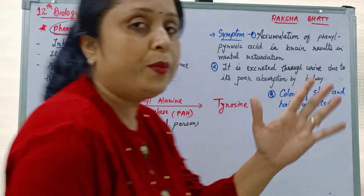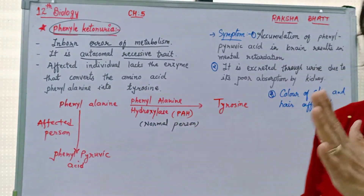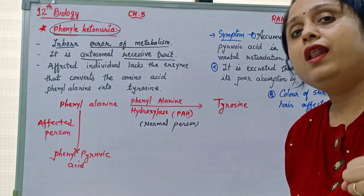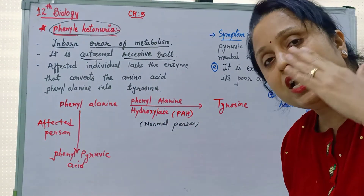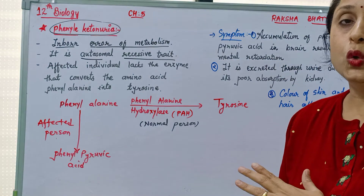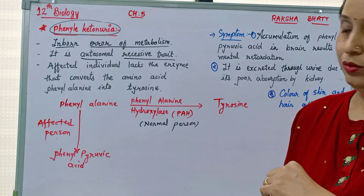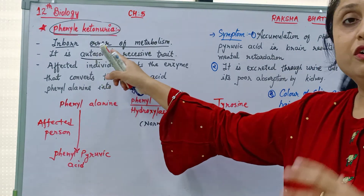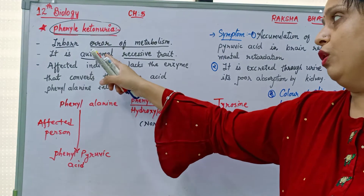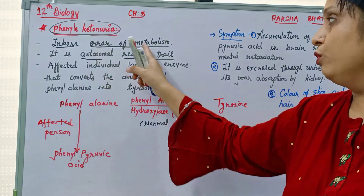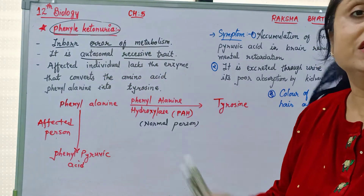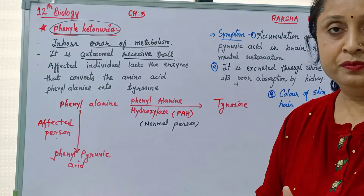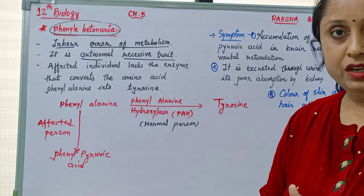22 pairs of chromosomes are similar both in male as well as in female. They are known as autosomes. The defective gene is present on the autosome, and that gene is recessive.